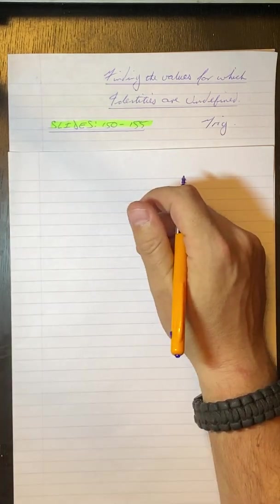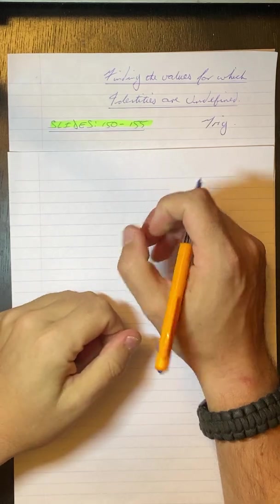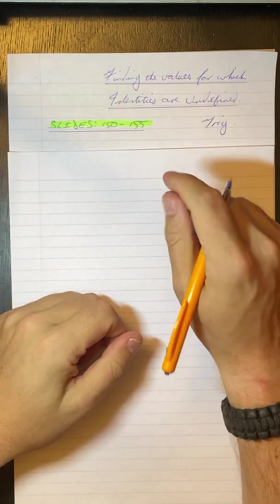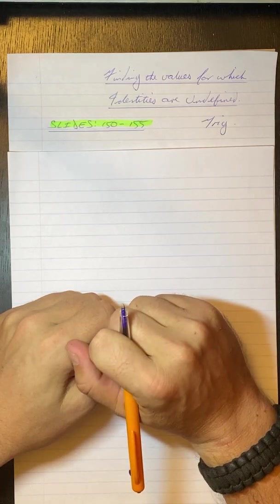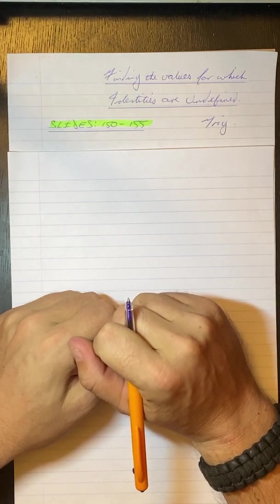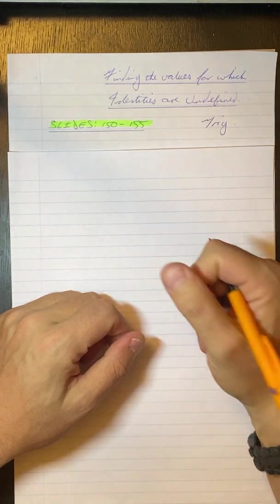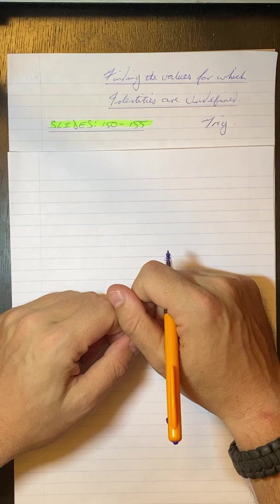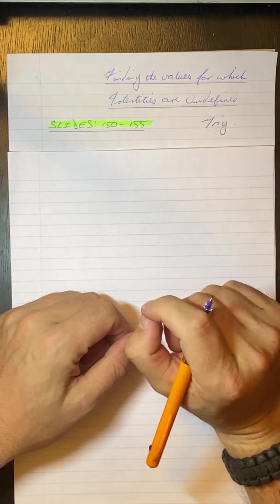Now if we think about when things are undefined, that's normally when we're dividing by zero. You've seen a lot with these trig identities that we've done, you have fractions, and those trig functions at the bottom can't be zero, otherwise you're dividing by zero and you get undefined. So that's just something to note when the denominator is zero.